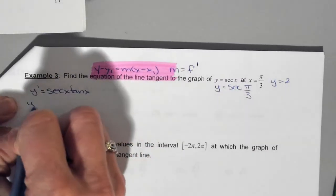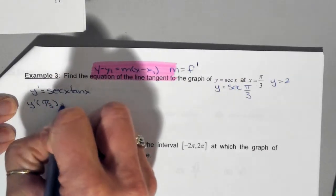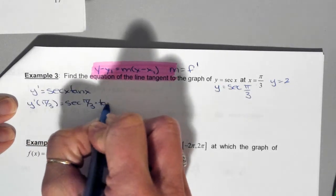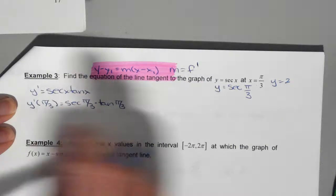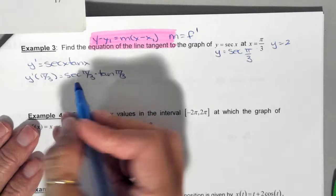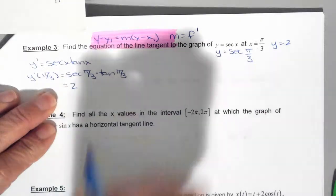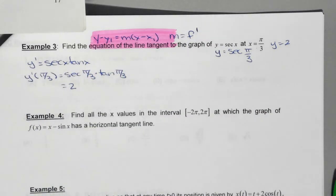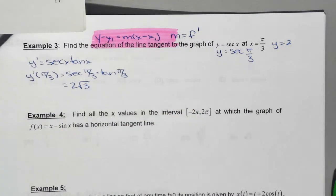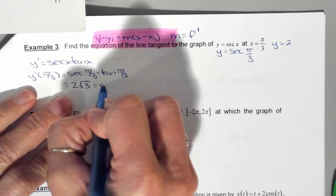Plug in pi over 3 to find the slope. So we want to evaluate y prime at pi over 3. So that means I have the secant of pi over 3 times the tangent of pi over 3. This will give me my slope, and then I can plug in all the pieces. We already figured out what the secant was. This is equal to 2. What's tangent of pi over 3? Square root of 3. I heard a lot of 3's, but it's just the square root of 3. So this represents my slope.